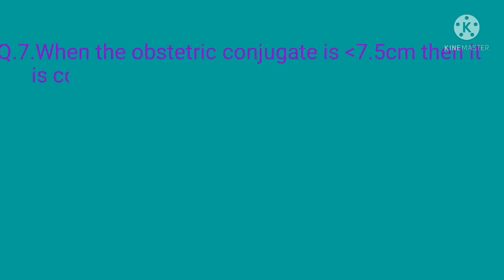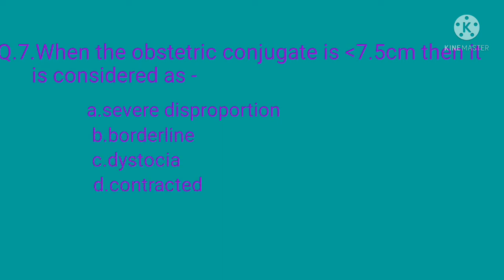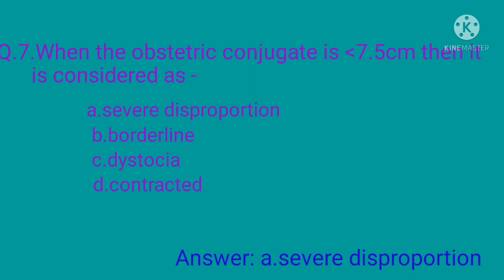Question 7: When the obstetric conjugate is less than 7.5 centimeter, then it is considered as — option A: severe disproportion, option B: borderline, option C: dystocia, option D: contracted. The correct option is option A: severe disproportion in the pelvic frame in anteroposterior diameter.